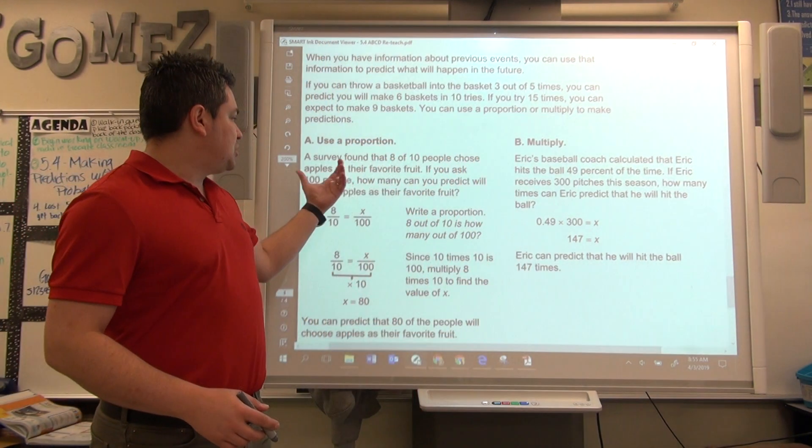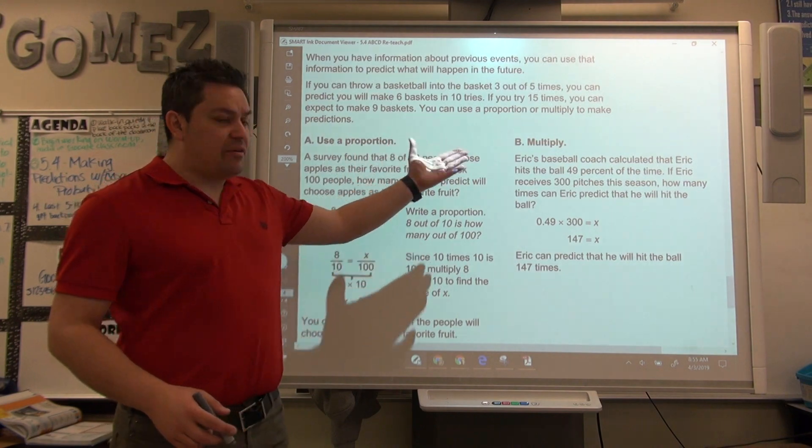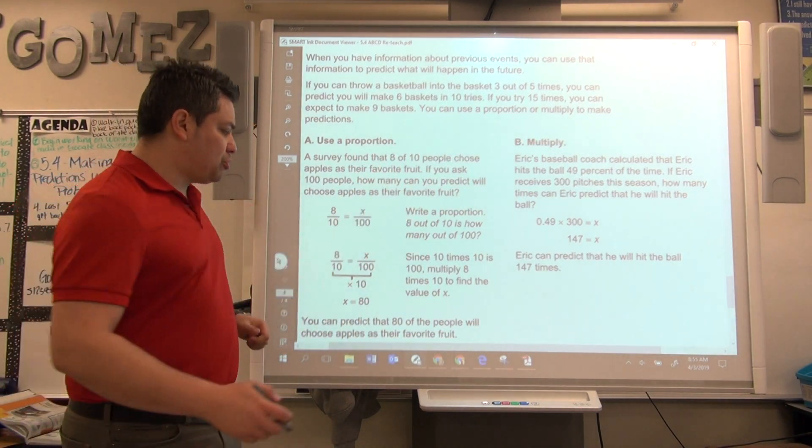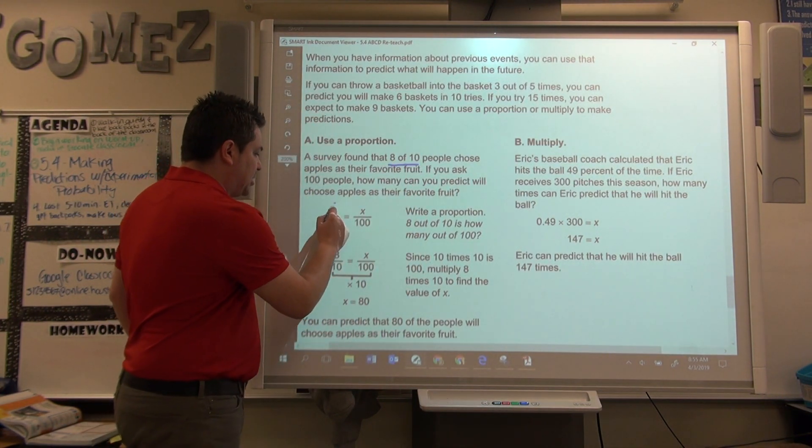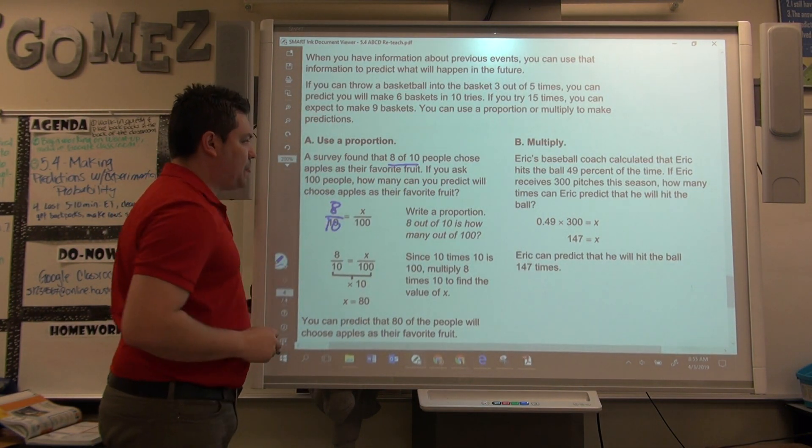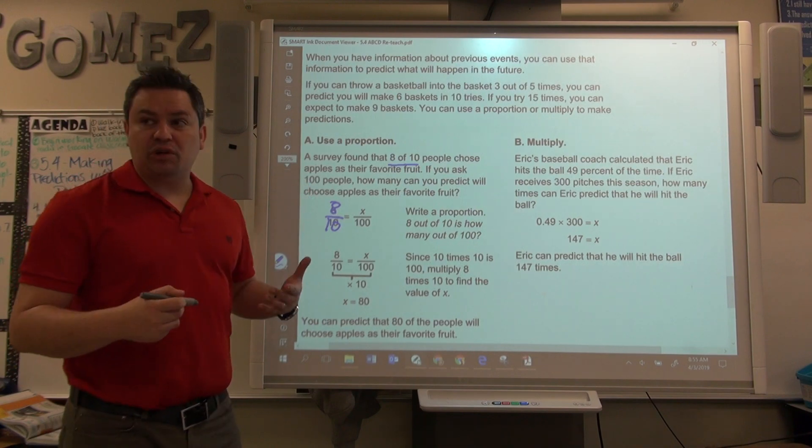They found that eight out of, so that's your proportion, that's your initial proportion, right here. Eight out of, which is right here. Eight out of ten. Eight out of ten. Now, if you ask a hundred people, that's the number of times you're going to be doing the experiment.